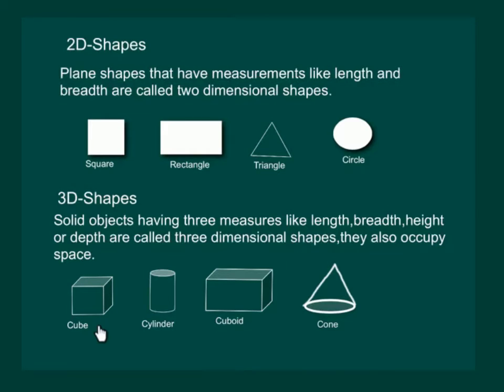A cube, a cylinder, a cuboid and a cone are examples of 3D shapes. We come across another 3D shape that is a ball, which is called a sphere.